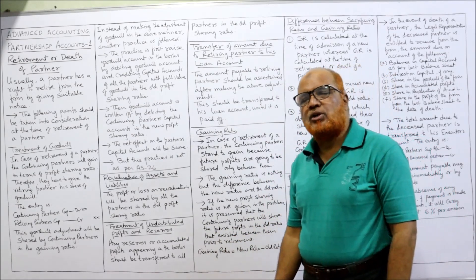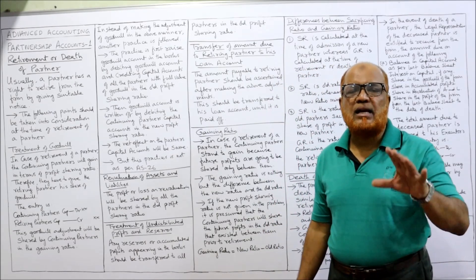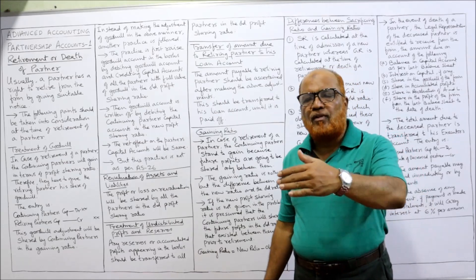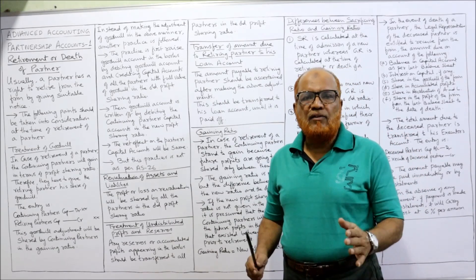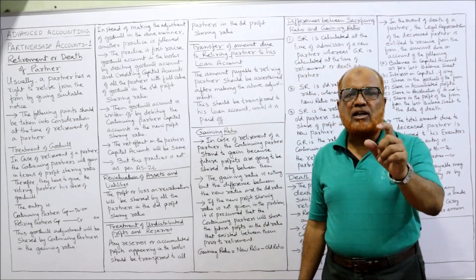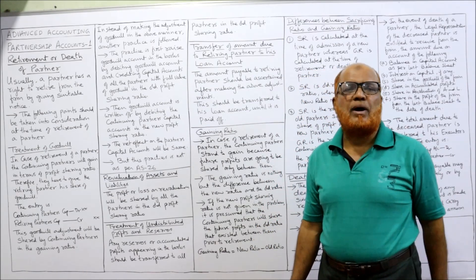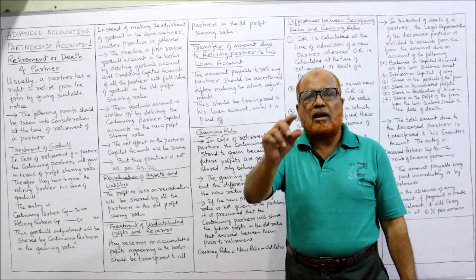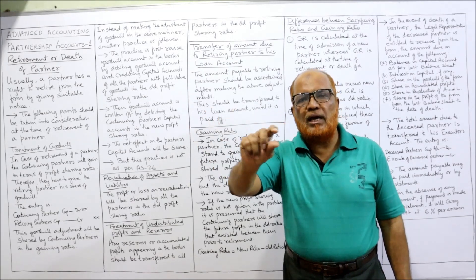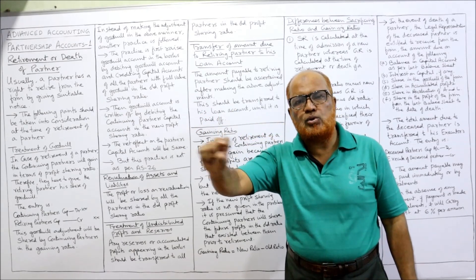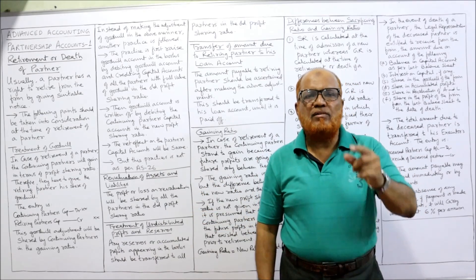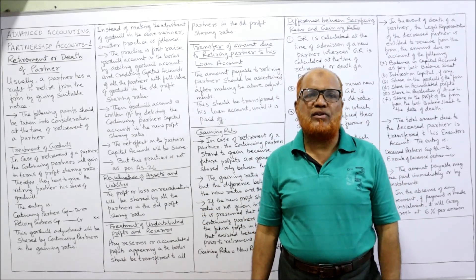The third adjustment is treatment of undistributed profits. This is also exactly the same as what we have done on admission of a partner. At the time of retirement, if there are any accumulated profits or reserves, they should be distributed among all partners. The entry will be: reserves account debit, accumulated profit account debit to A's capital, to B's capital, to C's capital — all partners including the retiring partner share it in the old profit sharing ratio.